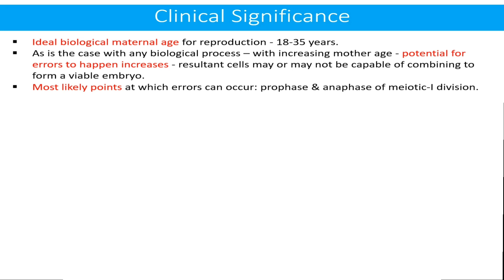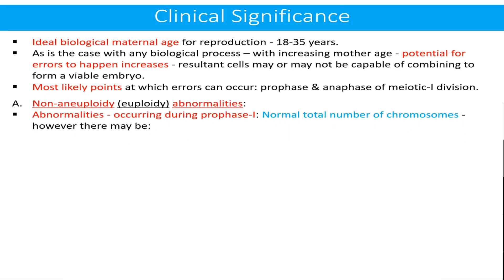Clinical significance of oogenesis: the ideal biological maternal age for reproduction is considered to be 18 to 35 years. As with any biological process, with increasing maternal age the potential for errors increases, and the resultant gametes may or may not be capable of combining to form a viable embryo. The most likely points at which these errors can occur are prophase and anaphase of the first meiotic division. These errors can be divided into two categories.